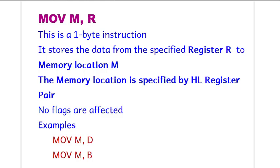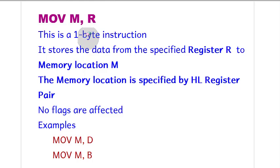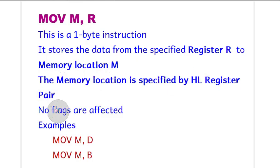R can be any register like A, B, C, D, HL, and M is the memory location. Now, which memory location? In 8085 there are around 65,536 locations, so the location is specified by the HL register pair. The memory location M is specified by the HL register pair. Because it is a data transfer instruction, no flags are affected.